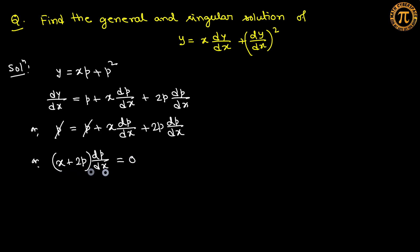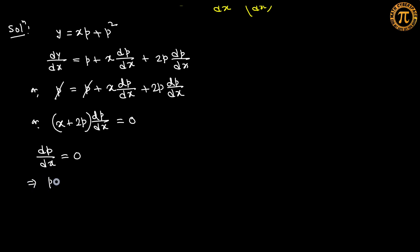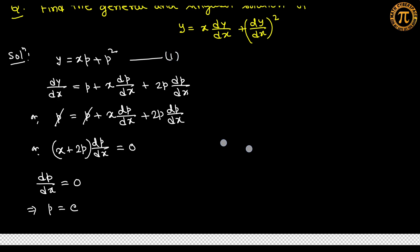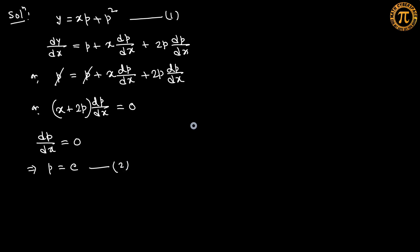Here p cancels on both sides, giving (x + 2p)·dp/dx = 0. We have two factors: (x + 2p) and dp/dx. The general solution comes from the factor containing the derivative term, and the singular solution comes from the factor not containing the derivative term. From dp/dx = 0, integrating gives p = c.